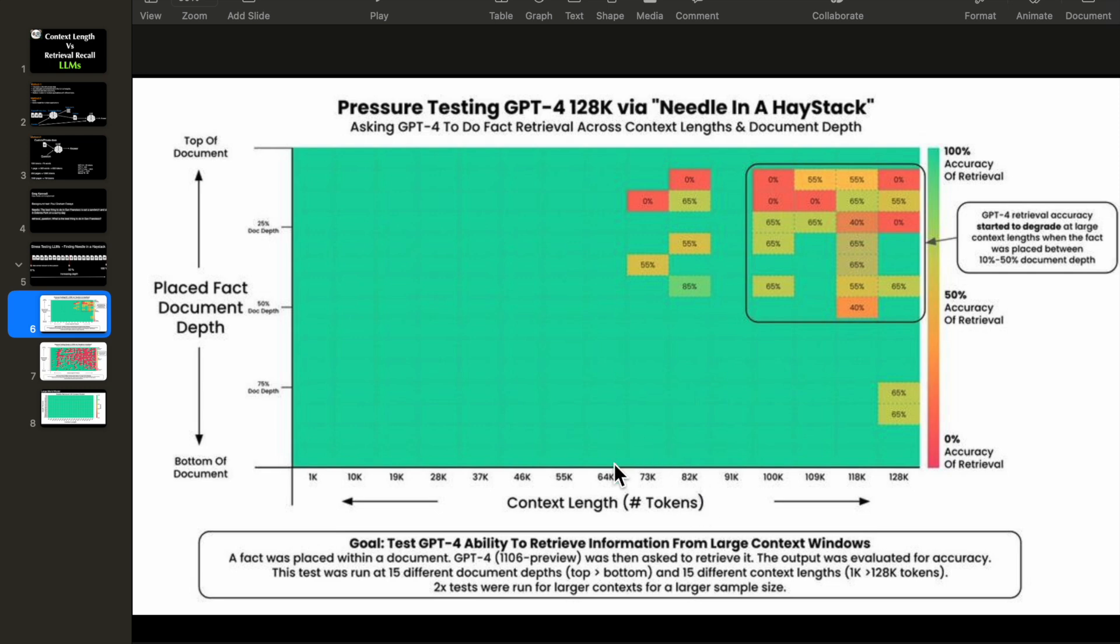As the context length is increasing, the model performance start to degrade, especially in this region. So for example, if our context length is 128k tokens and if we place our needle at the top of the document somewhere between let's say 5 to 10%, then the model is not able to retrieve the needle correctly.